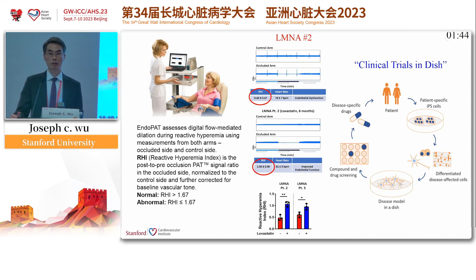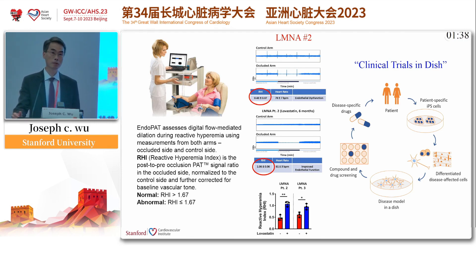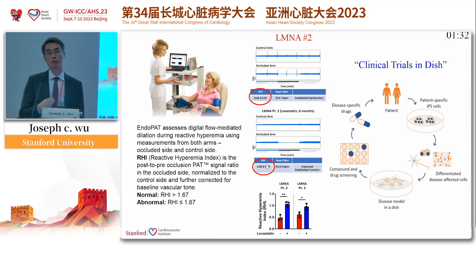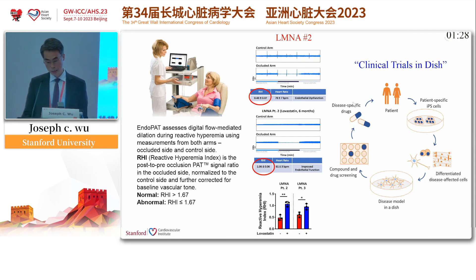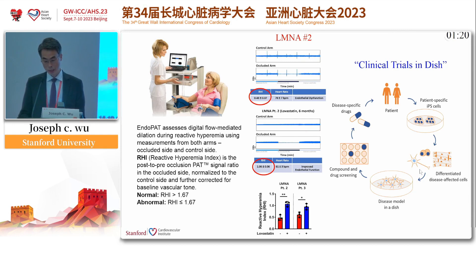So these are young individuals whose only finding is a lamin mutation — they have very poor vascular function with normal cholesterol. We give them lovastatin because it's already an FDA-approved drug. After six months, you can see the improvement of their vascular dysfunction. This is an example of a clinical trial in a dish — you have the patients, work out the exact mechanisms, come out with a drug hit, test your drugs on iPS cells, and then give it back to the same patient.